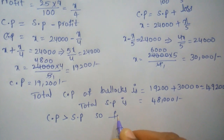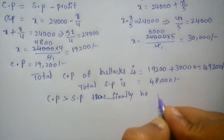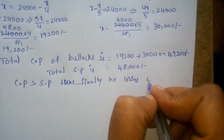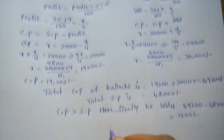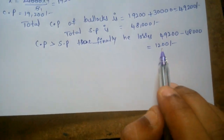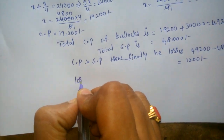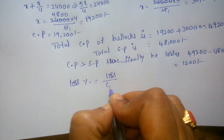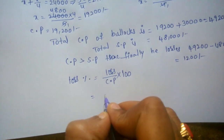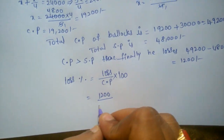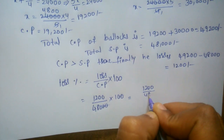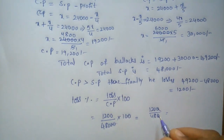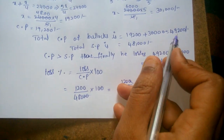The total loss is 49,200 minus 48,000 equals 1,200. Now we find the loss percent. Loss percent equals loss divided by CP into 100. Loss is 1,200 and the total CP is 49,200. Note: I made a mistake earlier writing CP as 48,000 — the correct total CP is 49,200.